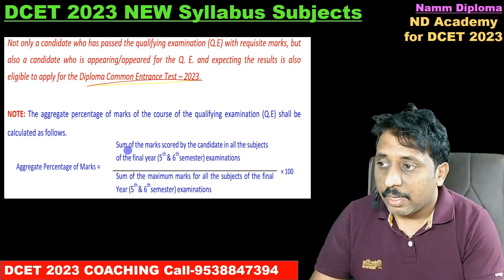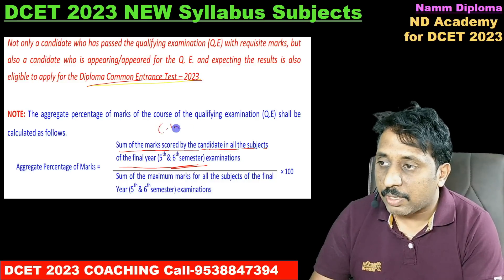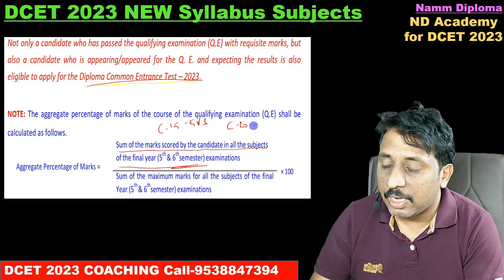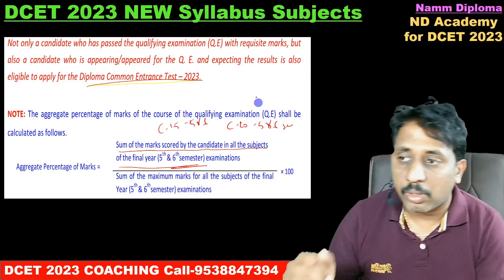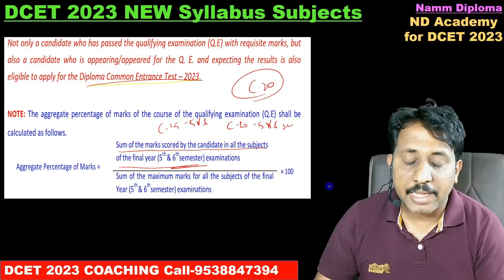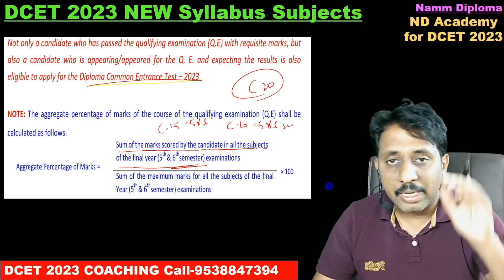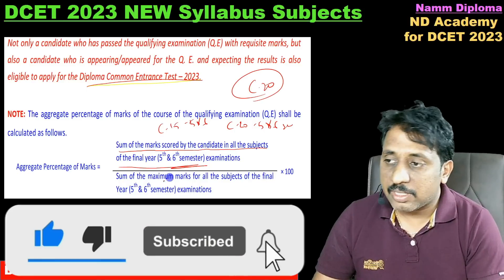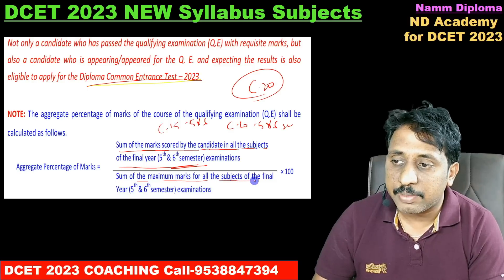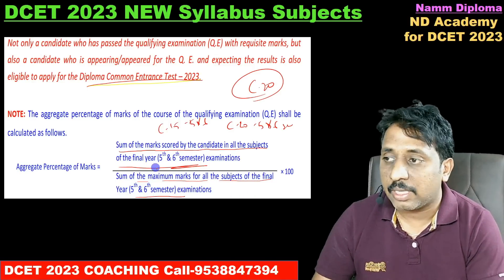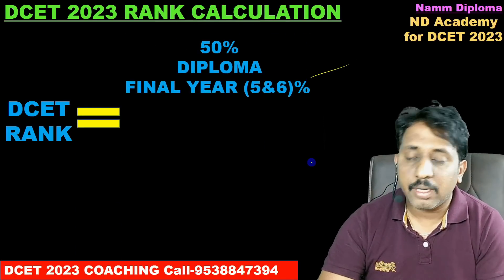They maintain the sum of marks scored by the candidate in all subjects of the final year — 5th and 6th semester. For C15 students, it's 5th and 6th semester; for C20 students, it's also 5th and 6th semester. This is very good news for C20 syllabus students because the percentage is much higher. For C20 students, the 5th and 6th semester marks are considered.